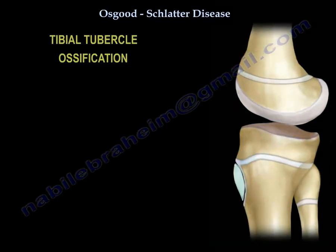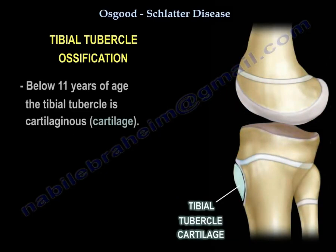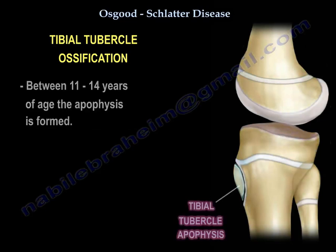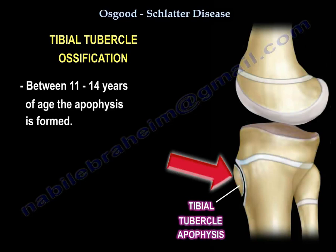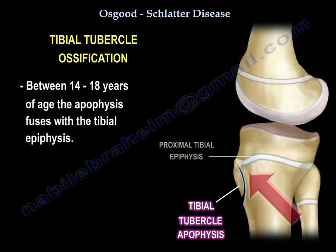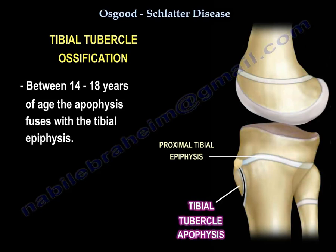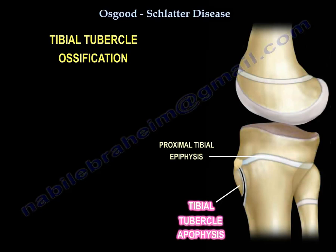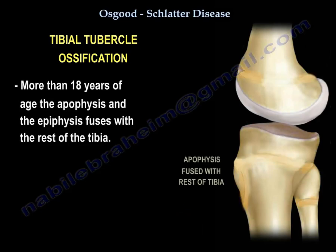Regarding tibial tubercle ossification: below 11 years of age, the tibial tubercle is cartilaginous. Between 11 and 14 years of age, the apophysis is formed. Between 14 to 18 years of age, the apophysis fuses with the tibial epiphysis. At more than 18 years of age, the apophysis and the epiphysis fuse with the rest of the tibia.